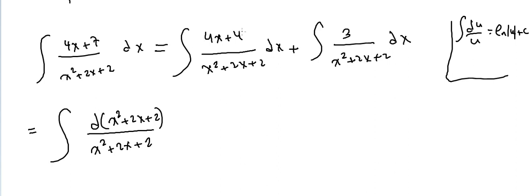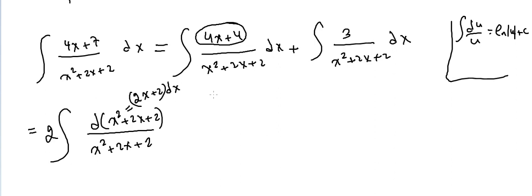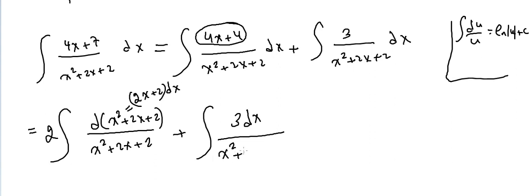For the second part, 3·integral of dx/(x² + 2x + 2), we complete the square: x² + 2x + 2 = (x+1)² + 1. This matches the tangent inverse form, so we can apply that rule to finish the problem in the next video.